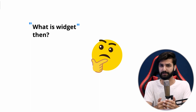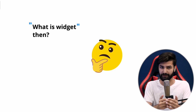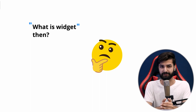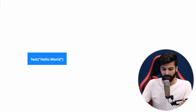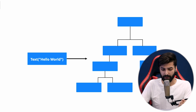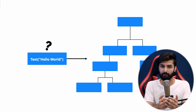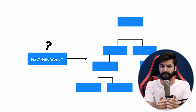A widget, in simple words, is an immutable description of a specific part of a user interface — how it is going to look. Examples of a widget include a Text widget, a Column, a Container, and many others. However, a widget like the Text widget does not know its position. A widget itself does not keep any information about itself or its relationships with other widgets in the widget tree.